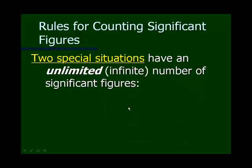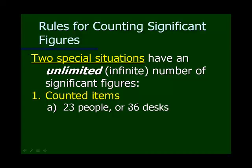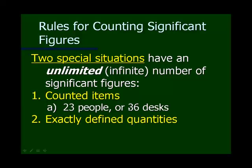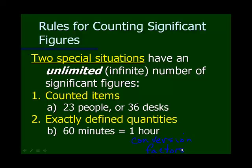There are two special situations with an unlimited or infinite number of significant figures. If you count something — 23 people or 36 deaths — that's infinite significant figures because we don't have 36 and a half deaths; we have exactly 36. The other special situation is an exactly defined quantity, sometimes called conversion factors, like 60 minutes in one hour or exactly 24 hours in one day.